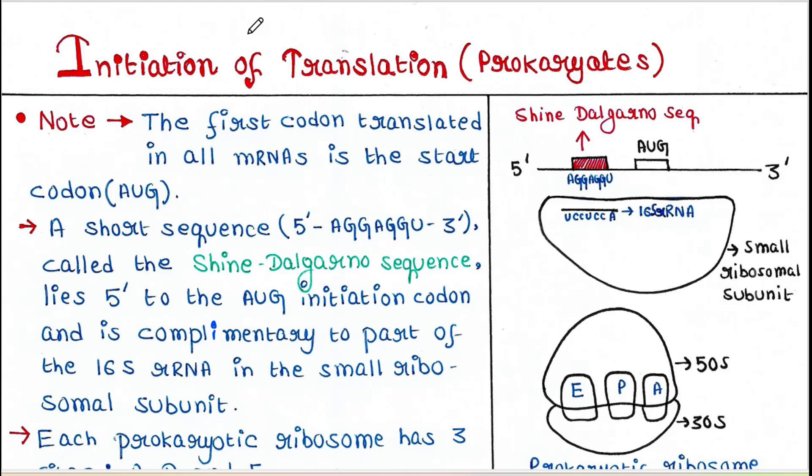Translation consists of three phases: initiation, elongation, and termination. Today we will talk about the initiation part.